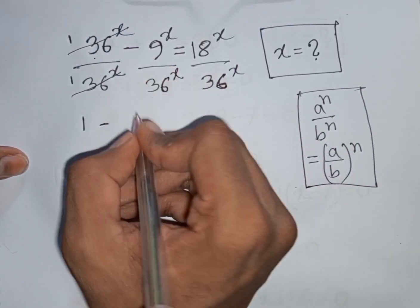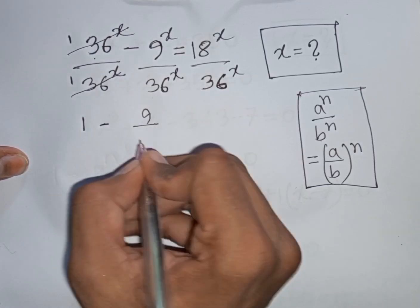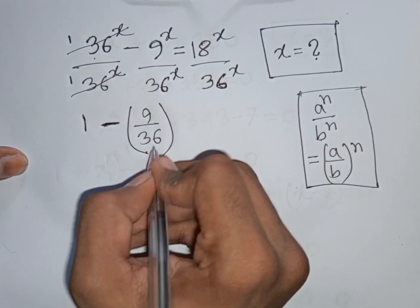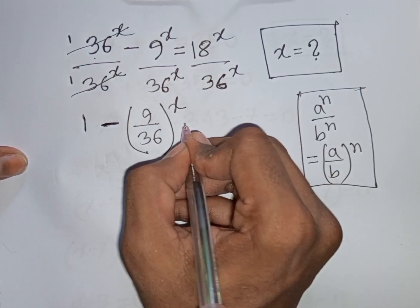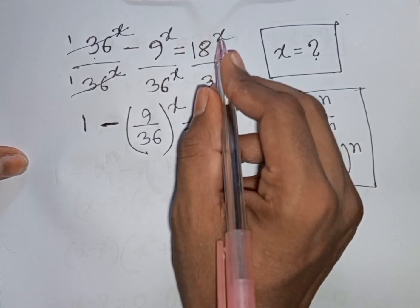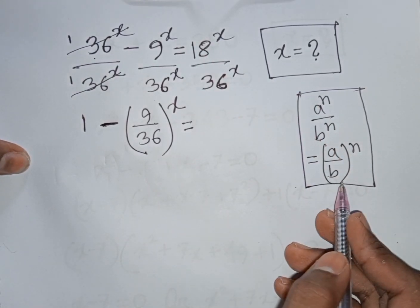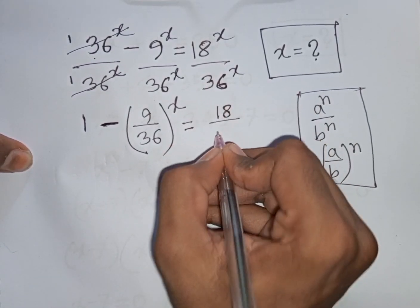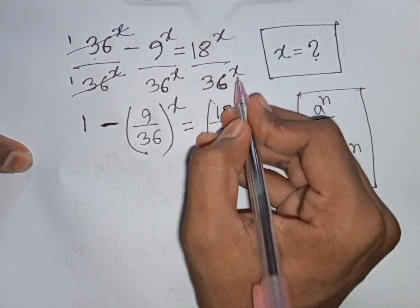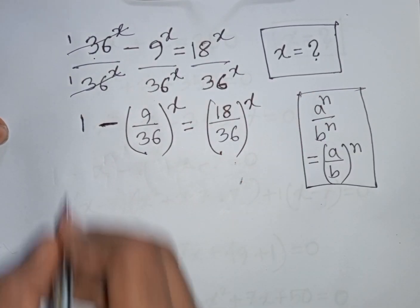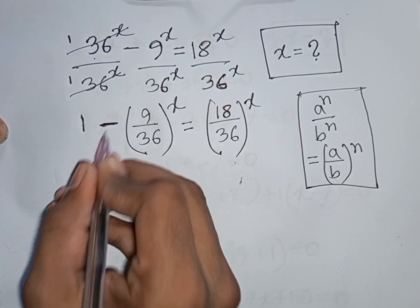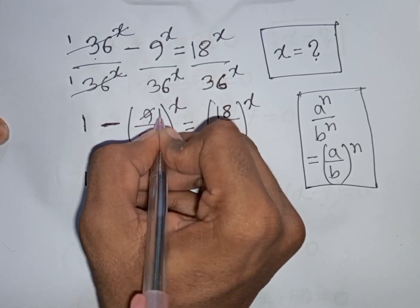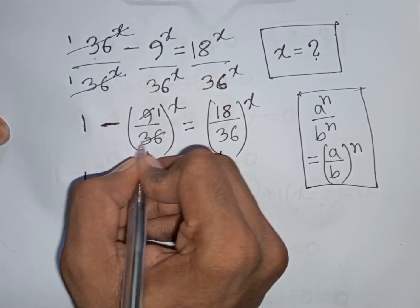According to this formula, we can write (9/36)^x equals (18/36)^x. Simplifying 9/36 by dividing by 9 gives 1/4, and 36/9 gives 4.